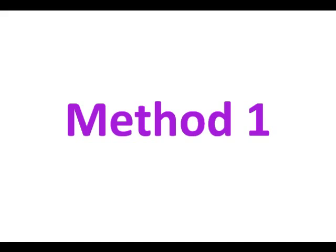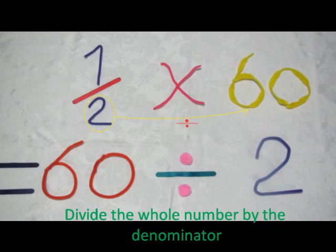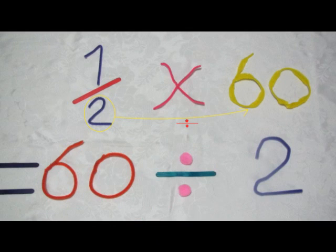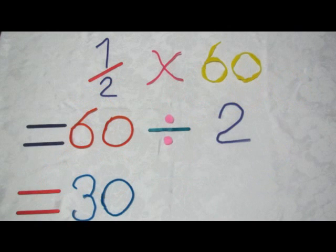Let's try method one first. In method one, we have one half of 60, which we said is equal to one half times 60. The first step in method one is to divide the whole number by the denominator. So we now have 60 divided by 2. 60 divided by 2 equals 30.